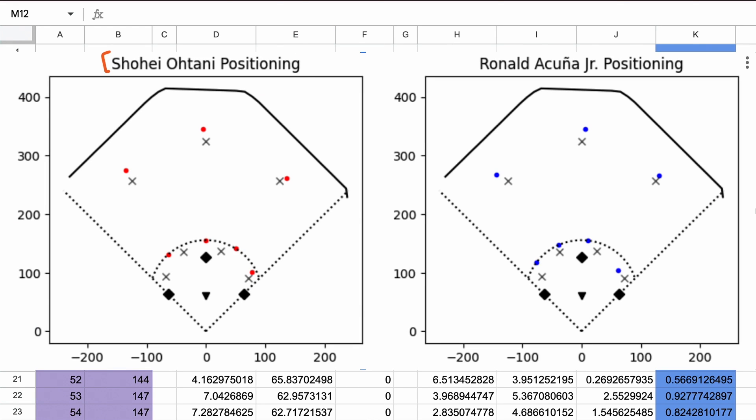Here are two images that show the different optimal positions for two good hitters at Tropicana Field. Otani, a left-handed hitter, and Acuna, a right-handed hitter. The X's on the figures show the starting positions of the fielders for the gradient descent algorithm. The scales on the sides are distances in feet.